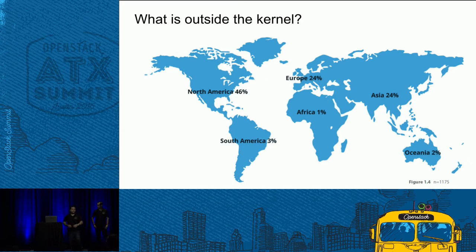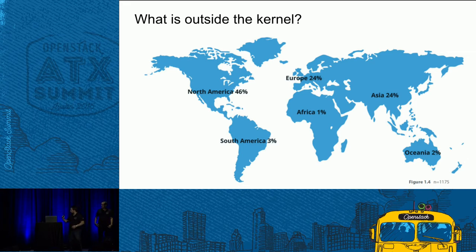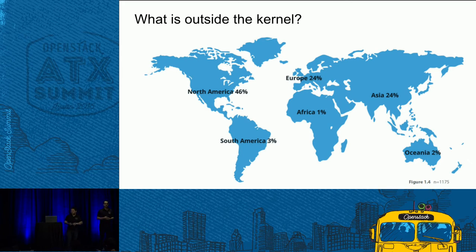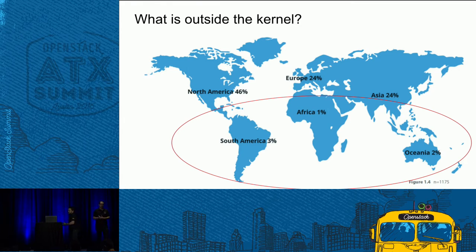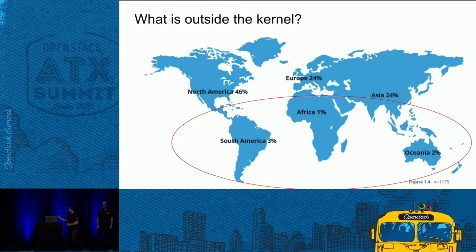We'd like to define what we consider 'not a kernel.' As you can see here from the data from the last survey, we have about 46% of developers not working in South America, 24% in Europe, and another 24% in Asia. We consider the not-kernel exactly the complement of that. We also consider India as not-kernel due to some economical factors. That's where we are located — in Campina Grande, in the northeast of Brazil.